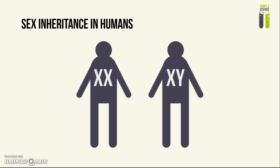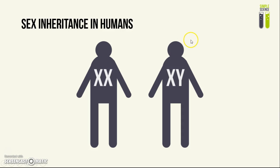The next thing we need to be aware of is the inheritance of sex in humans upon fusion of two gametes, or fusion of an ovum and a sperm. If both the ovum and the sperm cell contain an X chromosome, then this will result in a zygote that has two X chromosomes, and this means the zygote and consequently the baby will be a female. However, if upon fertilization one of the gametes contains a Y chromosome, then this will result in the zygote and the baby being male.